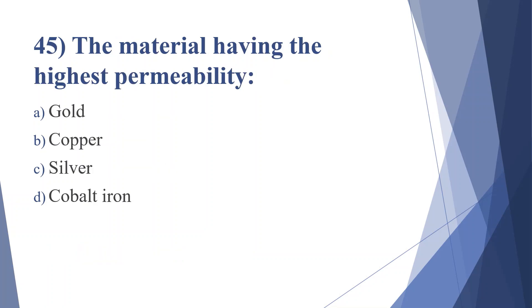Forty-fifth question: the material having the highest permeability — option A: gold, option B: copper, option C: silver, option D: cobalt iron. Answer is option D, cobalt iron.